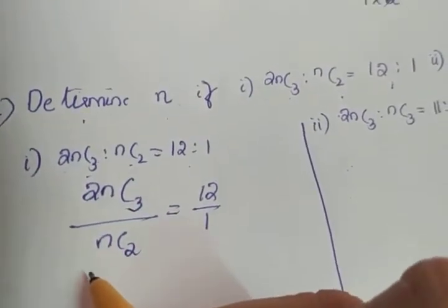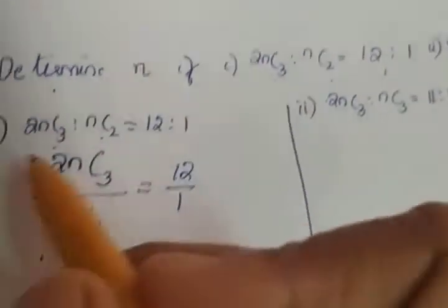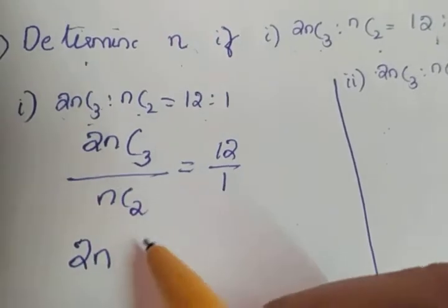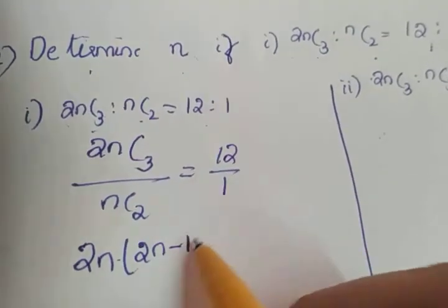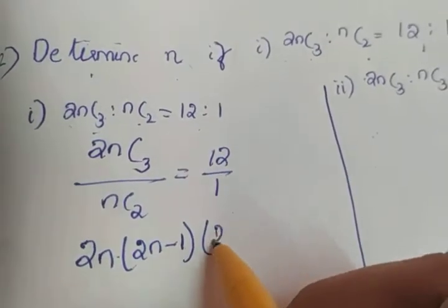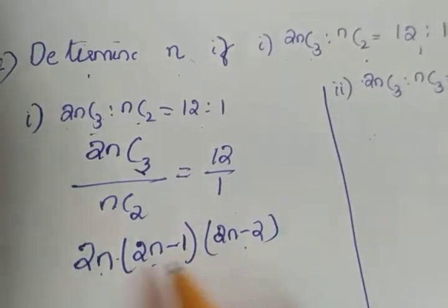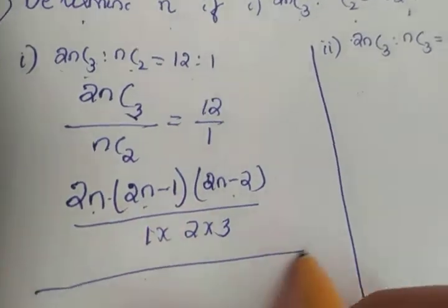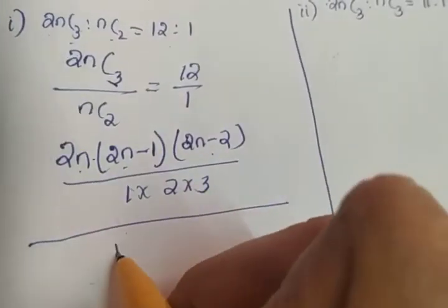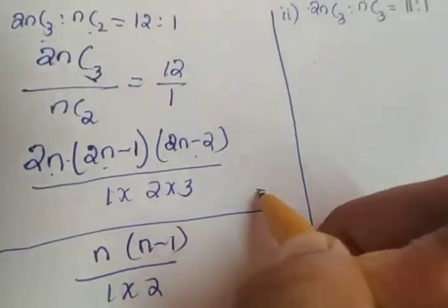Applying the combination formula: 2NC3 means start with 2N and write 3 numbers in descending order — 2N into 2N minus 1 into 2N minus 2 — divided by 3 factorial, which is 1 into 2 into 3. This whole expression is divided by NC2, which is N into N minus 1 divided by 1 into 2, and this equals 12.